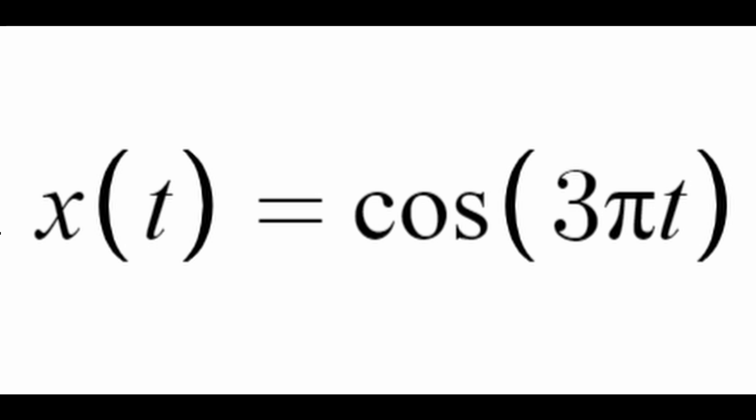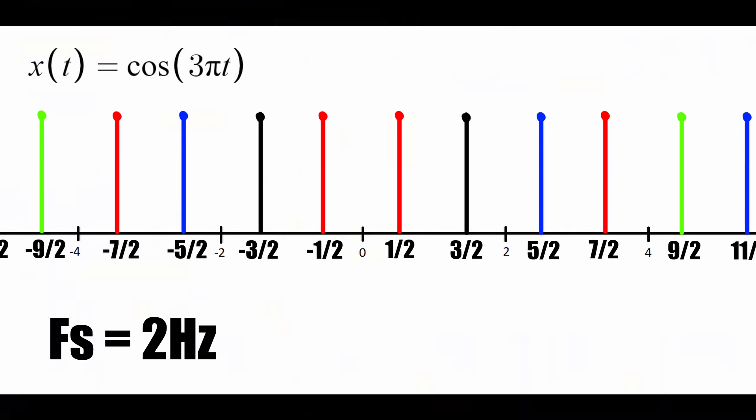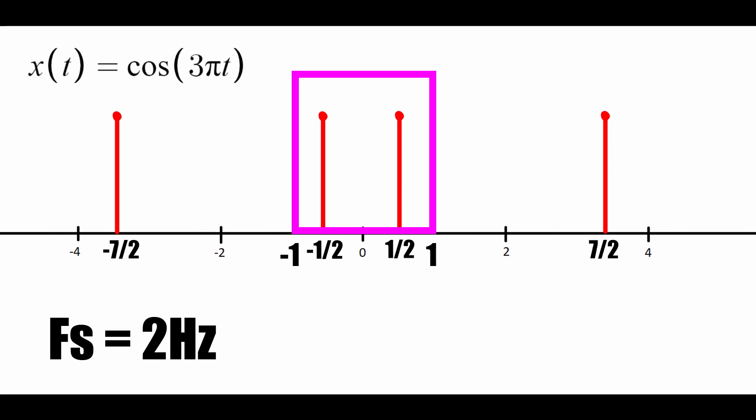Take this signal whose DTFT looks like this. Now sample it with a sample frequency of two hertz and filter with a cutoff frequency of half that. You can see that the filtered portion's inverse DTFT is back to cosine of pi n and not cosine of three pi n.